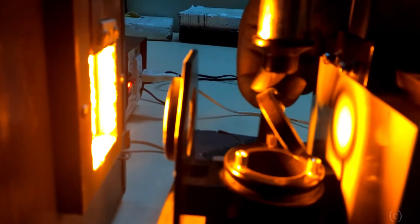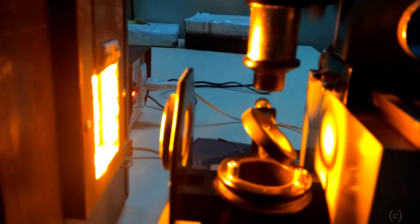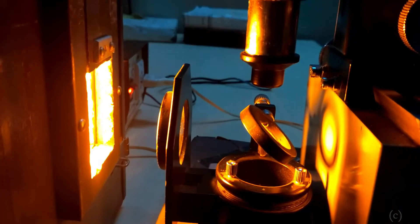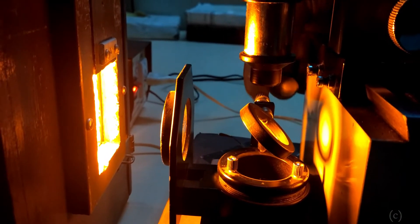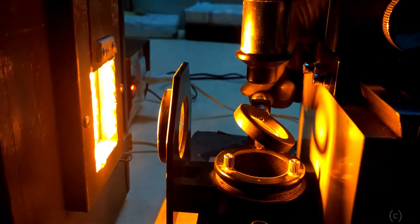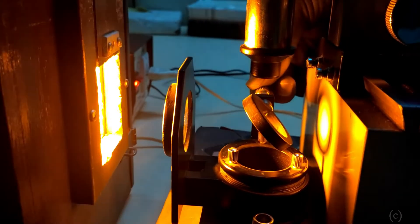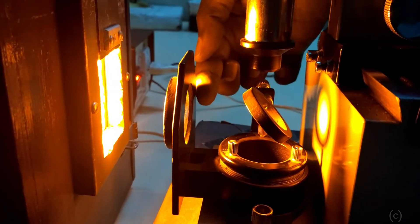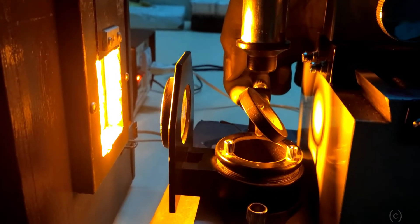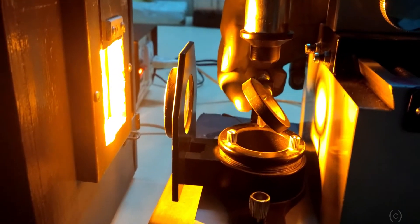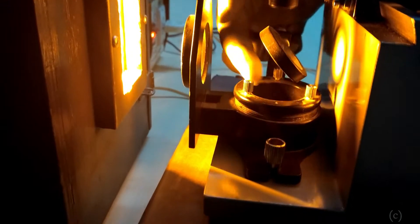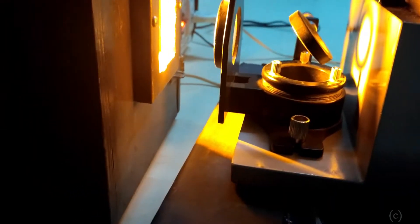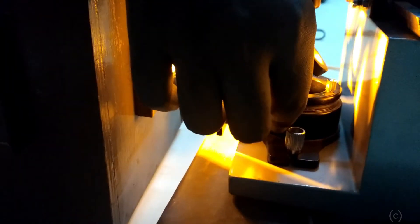You can change the angle of this using this screw. And when it is 45 degrees, the light which is coming here will get reflected from this glass plate and it will fall down here where the assembly of glass plate and plano convex lens are there.